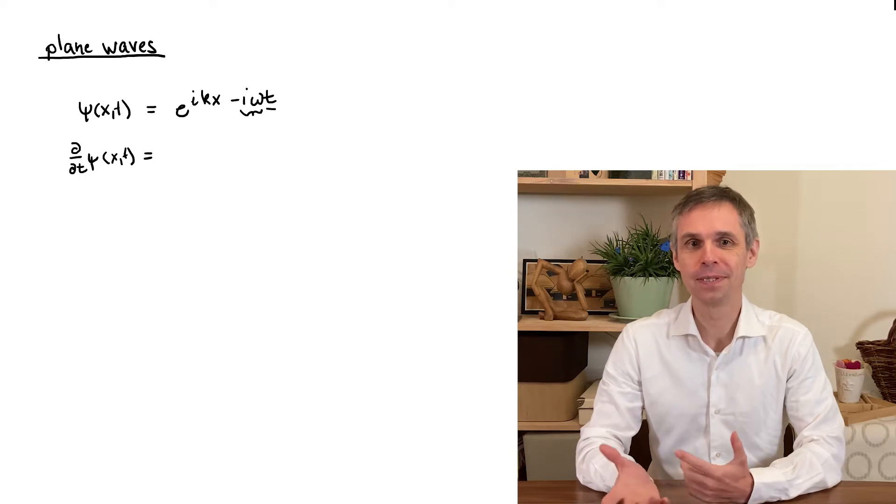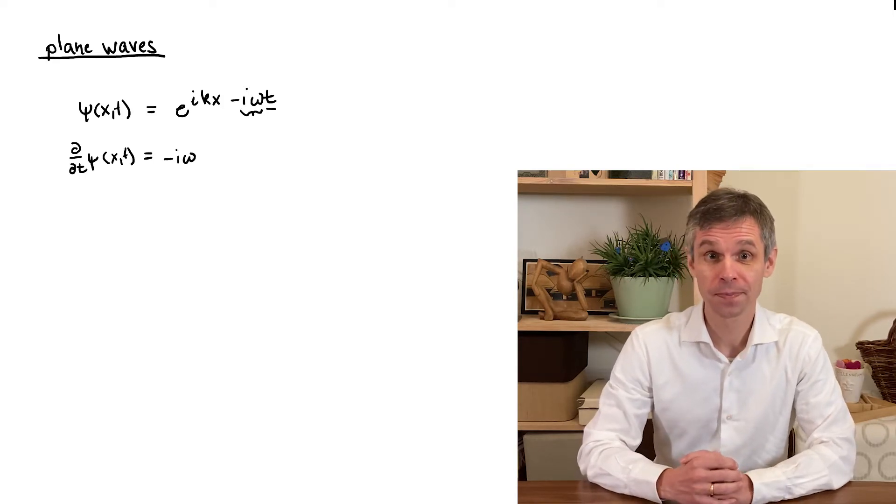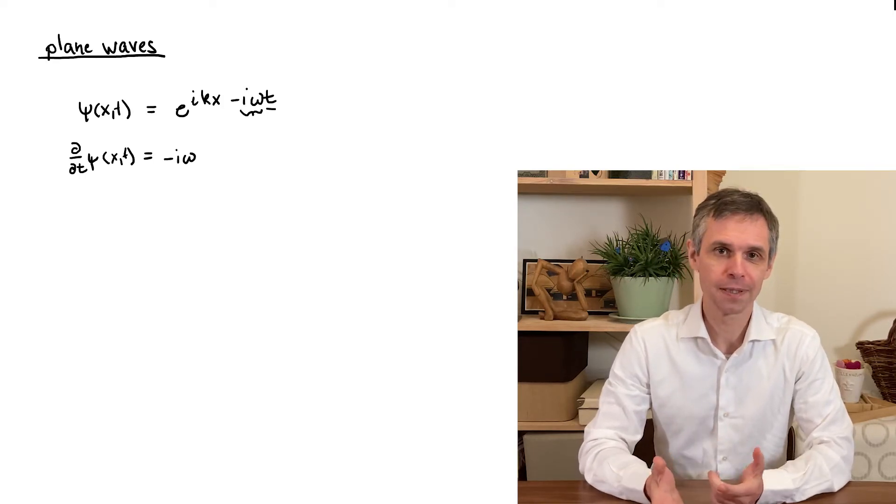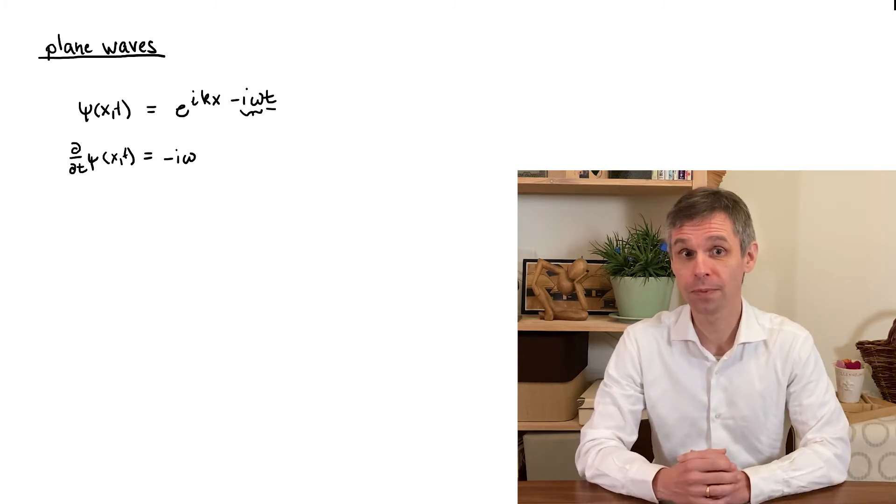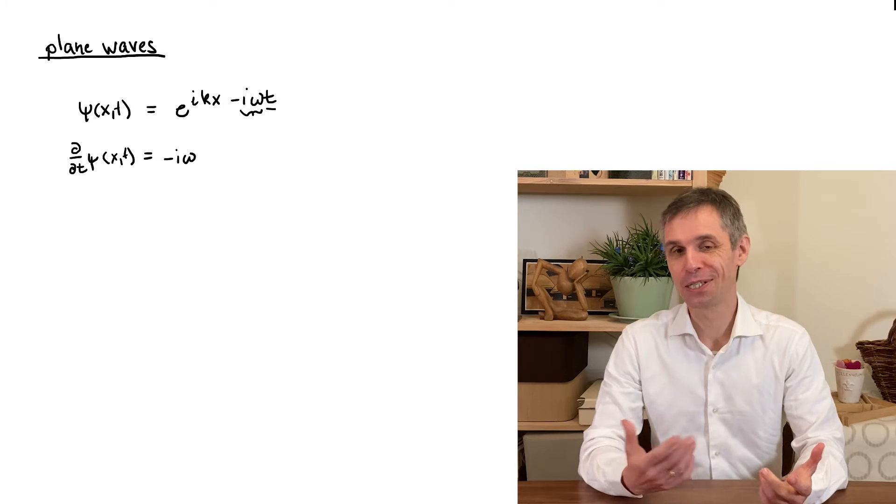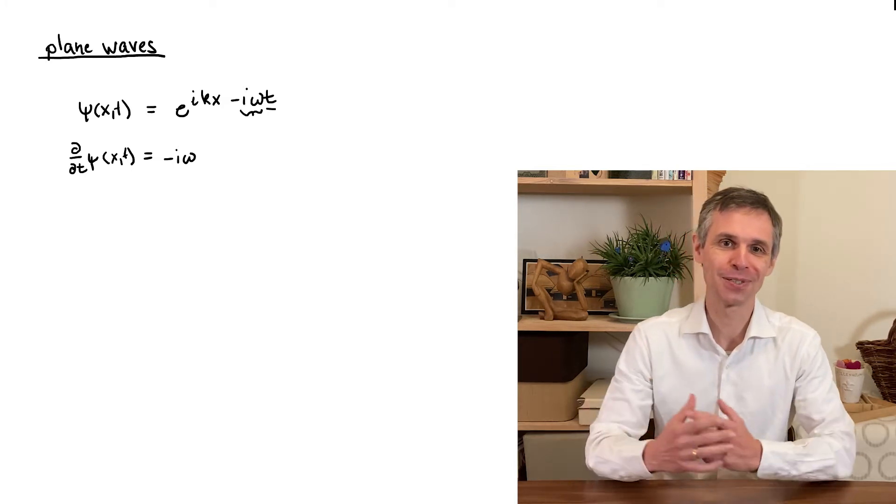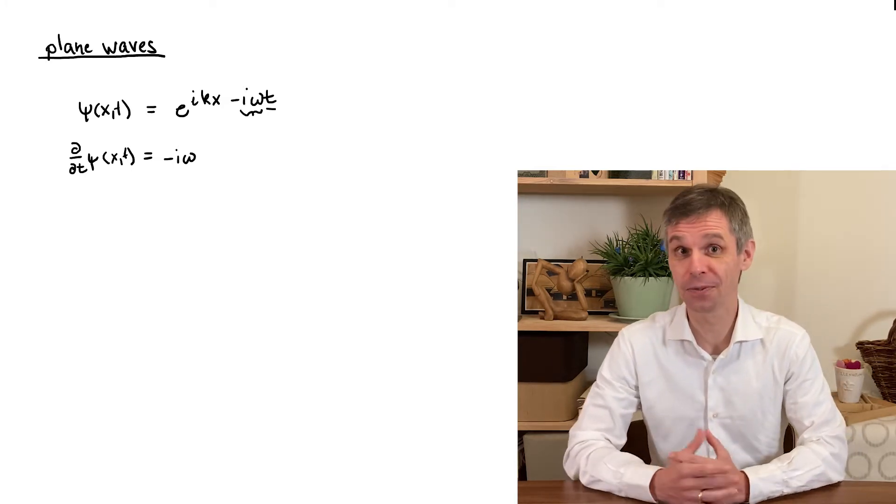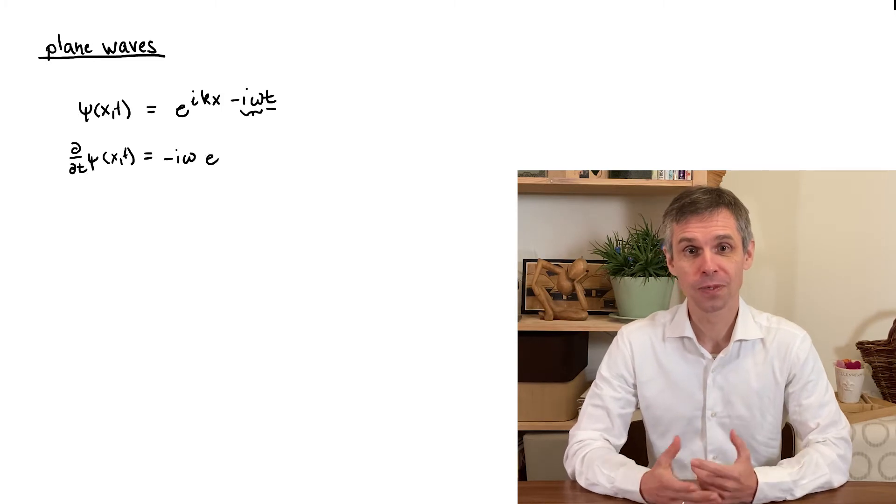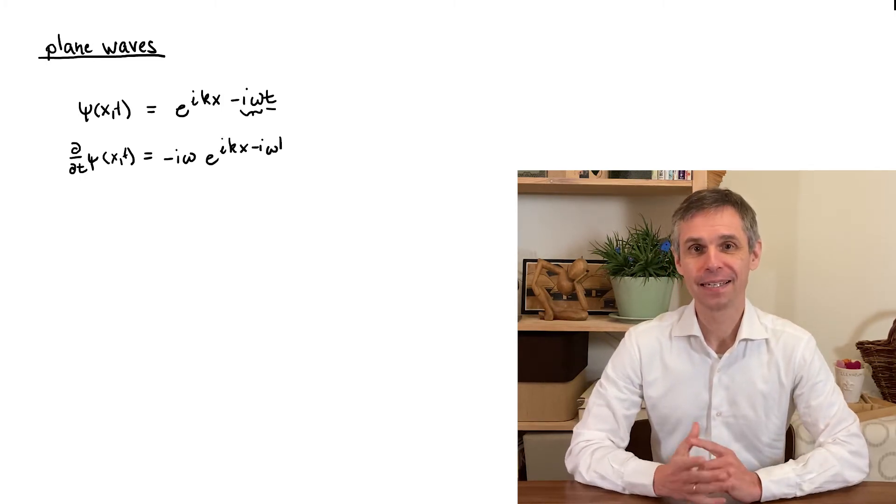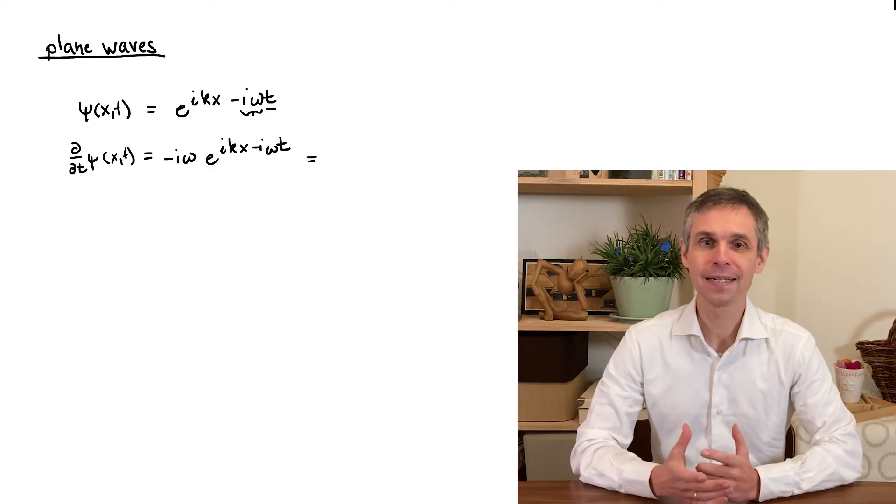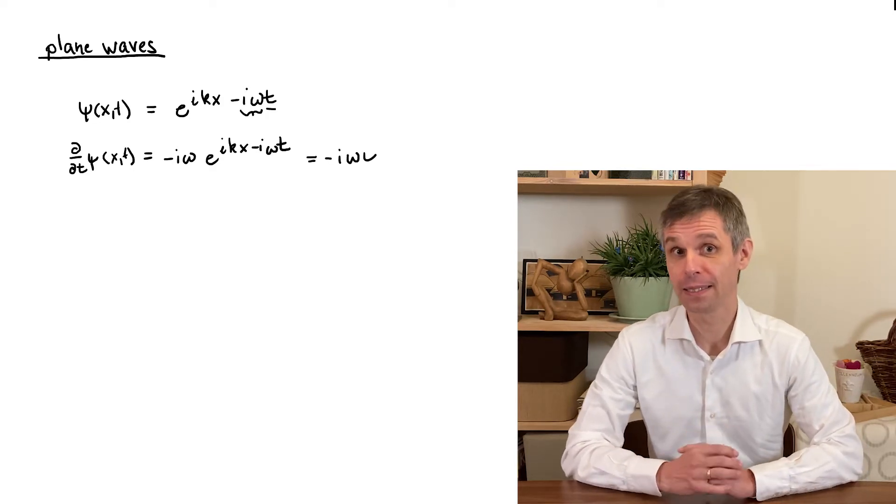According to the chain rule this factor will now appear in front of our expression and is then multiplied by the derivative of the exponential function with respect to its generic argument. But the exponential function is special because it does not change when you take this derivative. And so we just recover the function that we started out with and therefore can write this simply as minus i omega times the wave function.